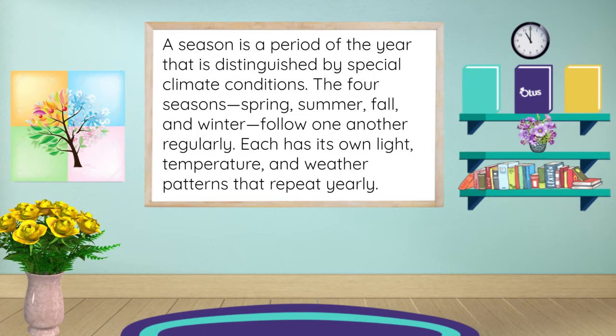A season is a period of the year that is distinguished by special climate conditions. The four seasons — spring, summer, fall, and winter — follow one another regularly. Each has its own light, temperature, and weather patterns that repeat yearly.